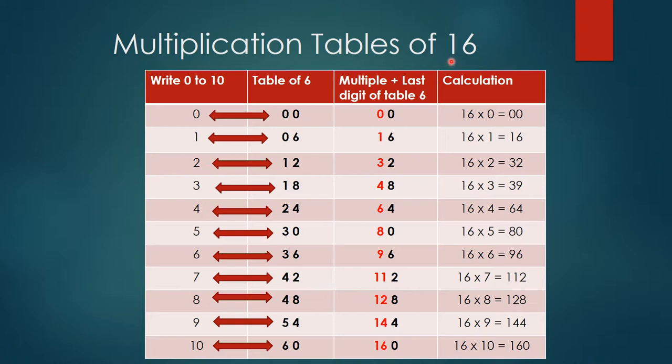If you want to learn table of 16, first observe the number. 16 is made up of two digits, 1 and 6. Six is in the units place and one is in the tens place. So 16 is the number made up of 1 and 6, that's all you have to remember.